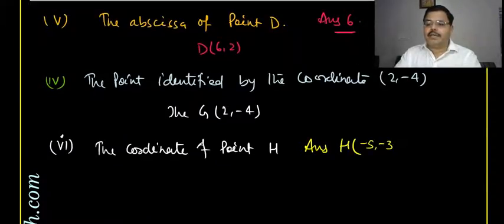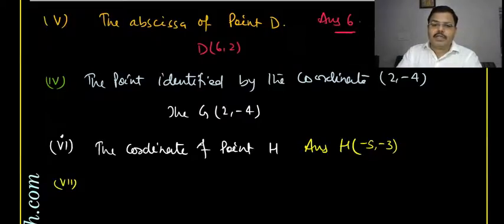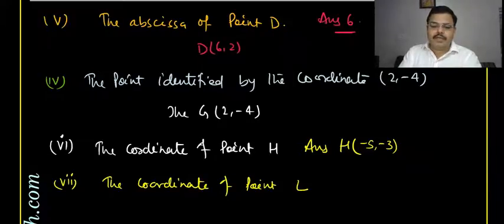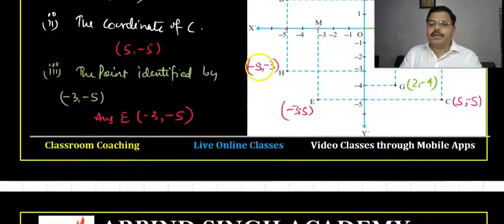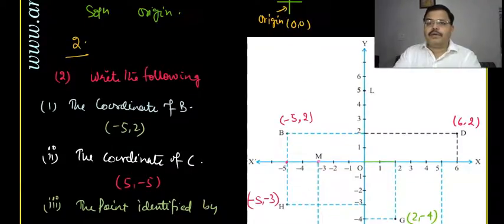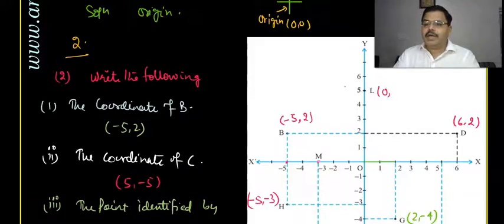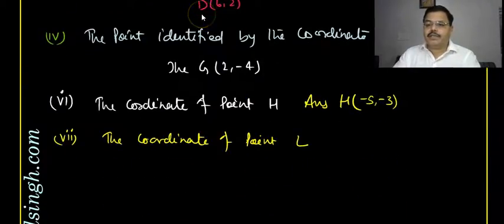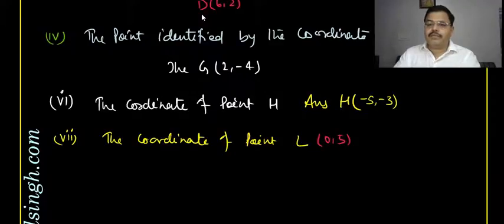The seventh question asks for the coordinate of point L. L lies on the y-axis, so the x-coordinate is definitely zero. The y-coordinate is positive 5. Therefore, the coordinate of L is (0, 5).